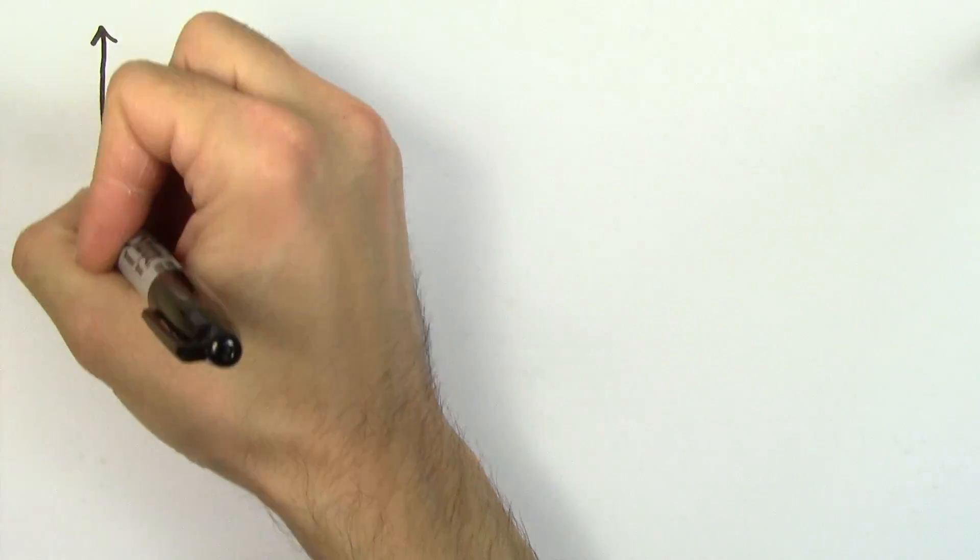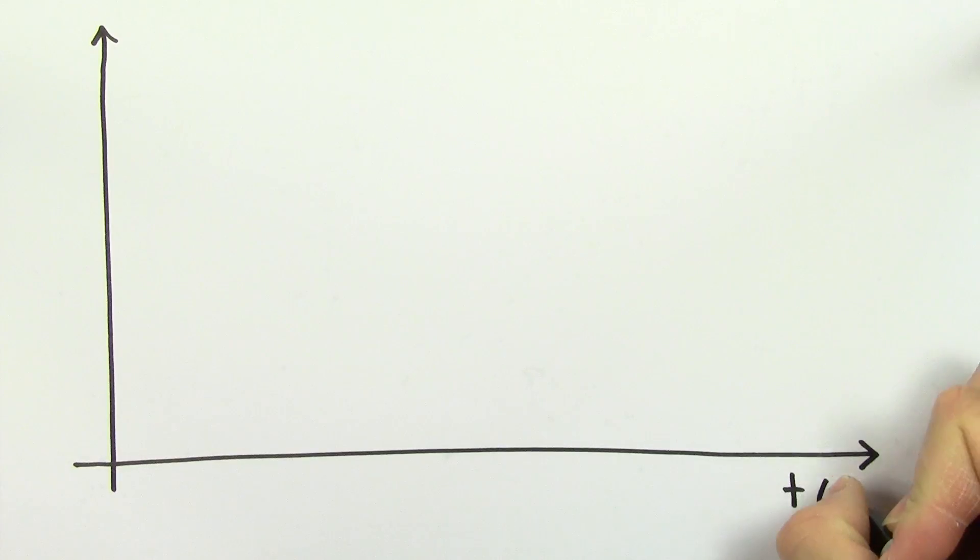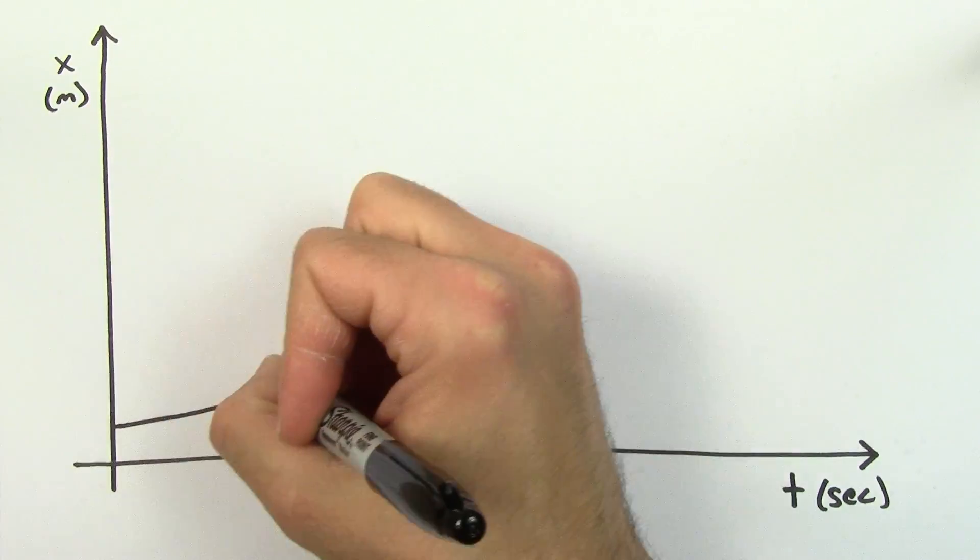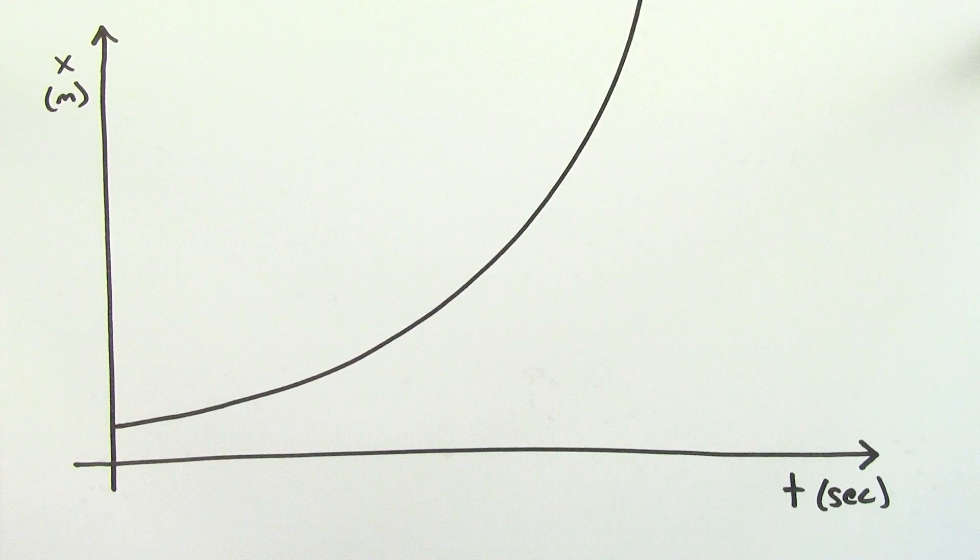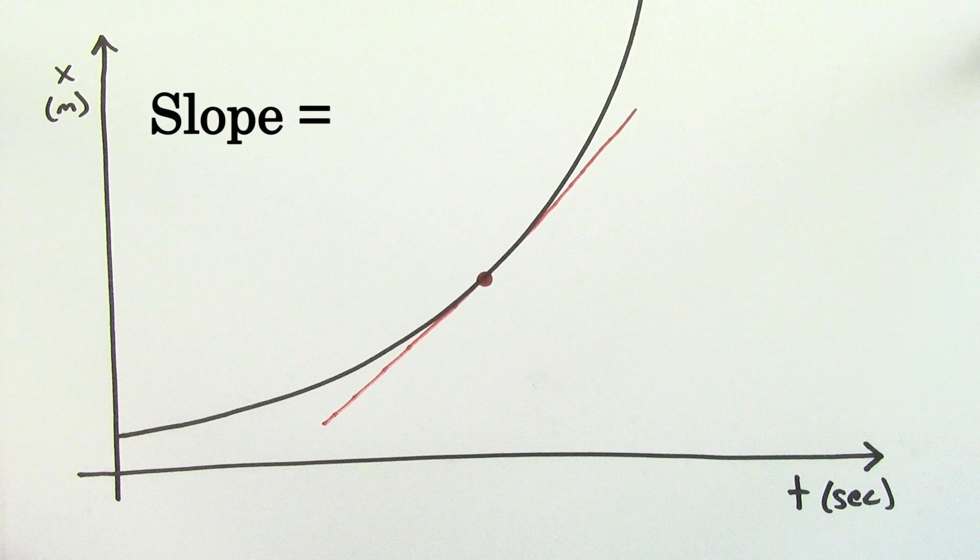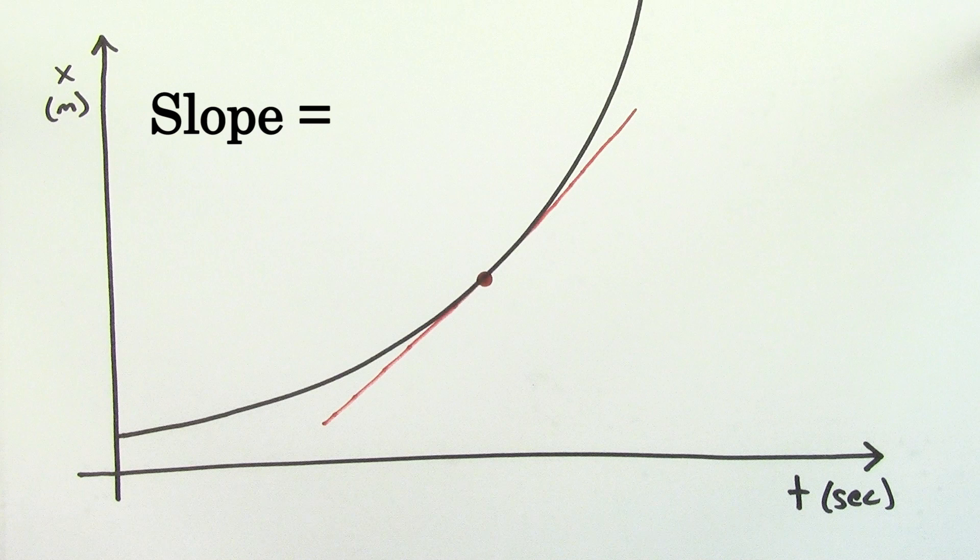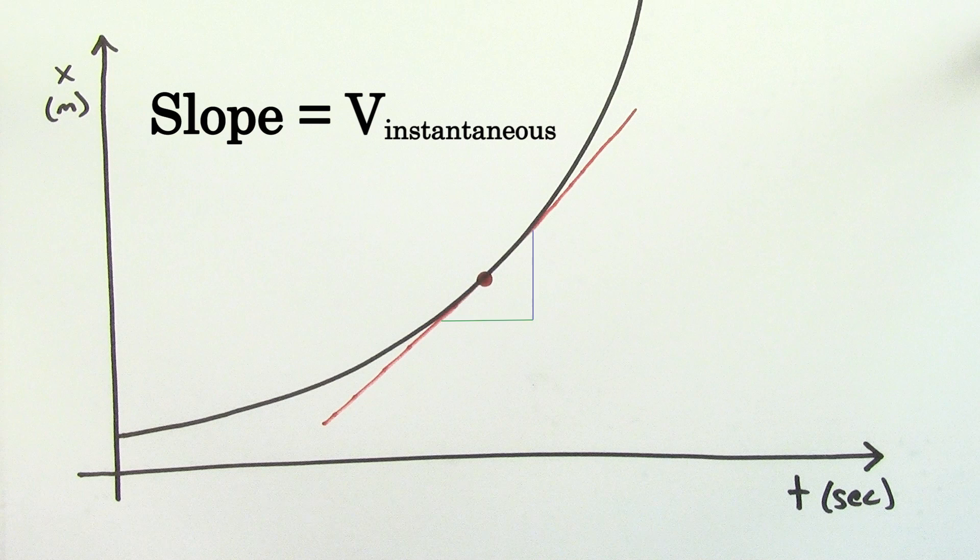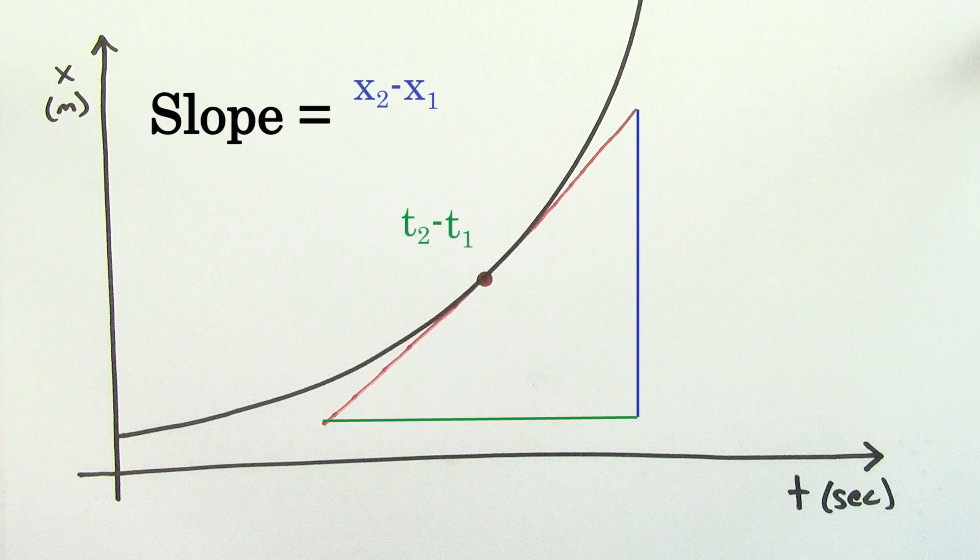If your velocity is changing, one way you can find the instantaneous velocity is by looking at the motion on an x versus t graph. The slope at any particular point on this position versus time graph is going to equal the instantaneous velocity at that point in time. Because the slope is going to give the instantaneous rate at which x is changing with respect to time.